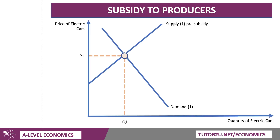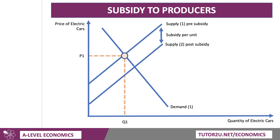Let's work through the subsidy diagram. There's the market equilibrium pre-subsidy: the price is P1 and the quantity is Q1. If we subsidise the producers, that lowers their costs, leading to an outward shift in the supply curve — there's the supply curve S2, post-subsidy. It's quite nice in the exam to say pre-subsidy and post-subsidy to make it really clear to the examiner. That outward shift in supply allows the market price to fall, and the subsidy per unit is key to the vertical distance between the two supply curves. The new equilibrium shows a higher output, Q2, and a lower price, P2.